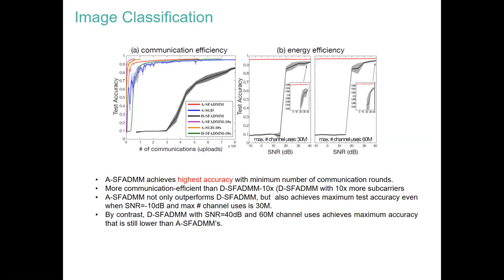For the next task — image classification — we plot test accuracy versus number of communication uploads for the analog stochastic ADMM, analog stochastic gradient descent, and digital counterparts. Again, 10x refers to 10 times more resources allocated for the digital baseline. The analog baselines are extremely fast in terms of convergence to higher accuracy, whereas the digital one requires much more communication. On the energy efficiency plot, the analog baseline achieves much higher performance, and digital only reaches it at around 15 dB SNR.